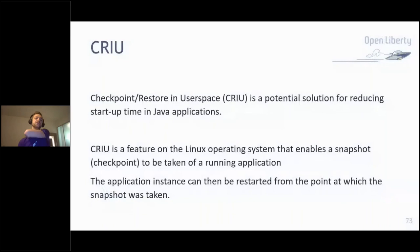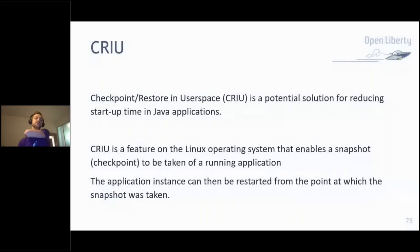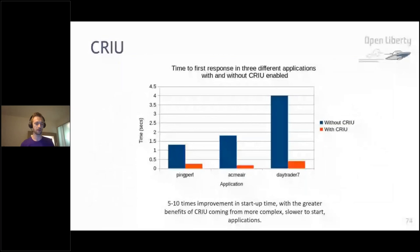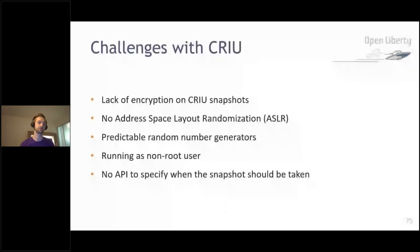CRIU stands for Checkpoint/Restore In Userspace. It basically uses a Linux OS feature to enable a snapshot and get your application started very quickly. We've been playing with this for quite a while — we can get startup time of an application down from one second to about 0.2 seconds, and you get more benefits the bigger your application is. There are some challenges: lack of encryption, no address space layout randomization, predictable random number generators, running as non-root in containers is problematic, and there are no APIs to specify when the snapshot should be taken. But these are all being worked out — keep an eye on this technology.